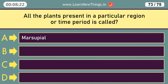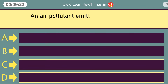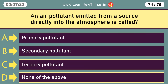All the plants present in a particular region or time period is called Flora. An air pollutant emitted from a source directly into the atmosphere is called a primary pollutant.